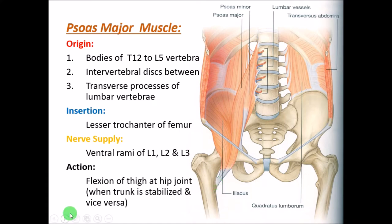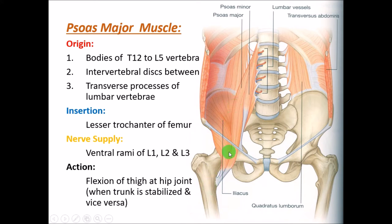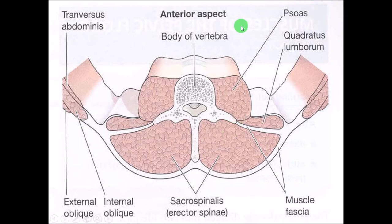The main action of psoas major is flexion of the thigh at the hip joint. When the trunk is stabilized, the muscle helps flex the hip joint and the limb moves. If the limb is fixed on the ground, then the trunk moves in flexion. So that is the function of the psoas major muscle — flexion at the hip joint.